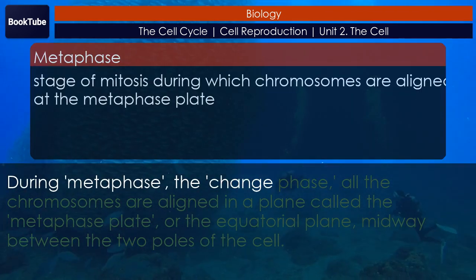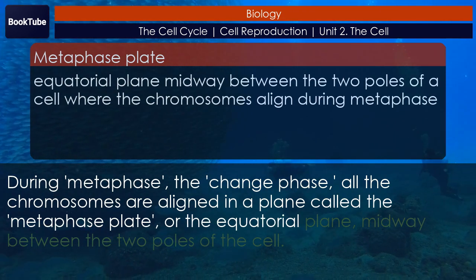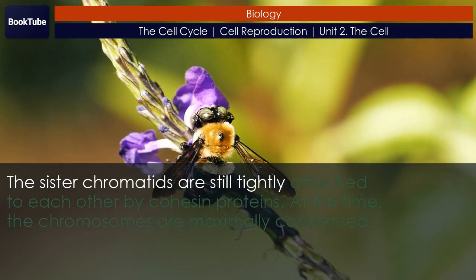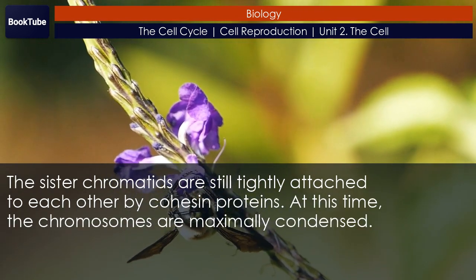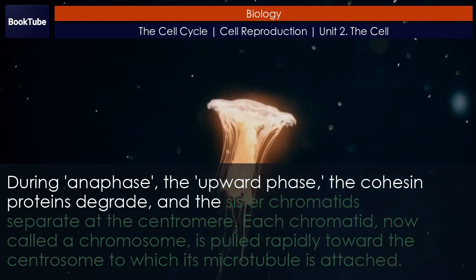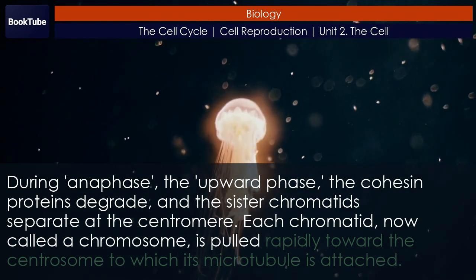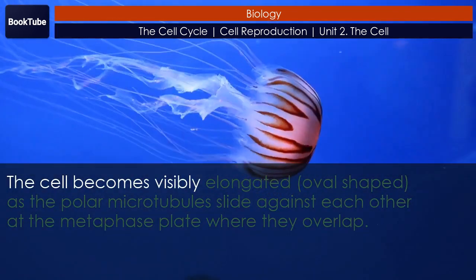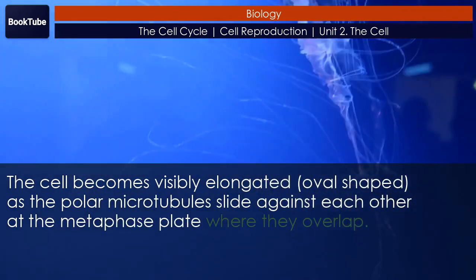During metaphase, all the chromosomes are aligned in a plane called the metaphase plate, or the equatorial plane, midway between the two poles of the cell. The sister chromatids are still tightly attached to each other by cohesin proteins, and at this time the chromosomes are maximally condensed. During anaphase, the cohesin proteins degrade and the sister chromatids separate at the centromere. Each chromatid, now called a chromosome, is pulled rapidly toward the centrosome to which its microtubule is attached. The cell becomes visibly elongated and oval-shaped as the polar microtubules slide against each other at the metaphase plate where they overlap.